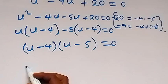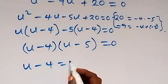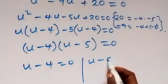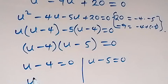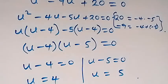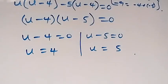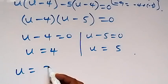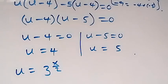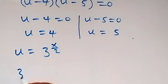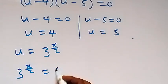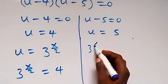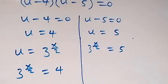We have two cases: u minus 4 equals 0, or u minus 5 equals 0. Recalling that we represented u as 3 raised to power x over 2, we substitute back: 3 raised to power x over 2 equals 4, or 3 raised to power x over 2 equals 5.